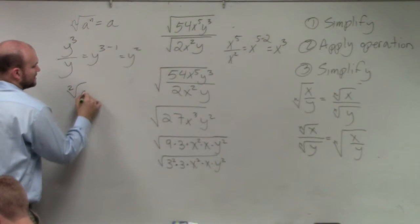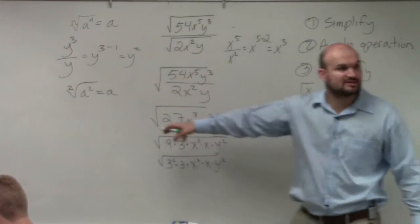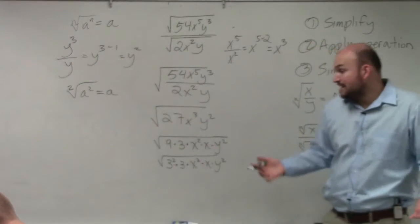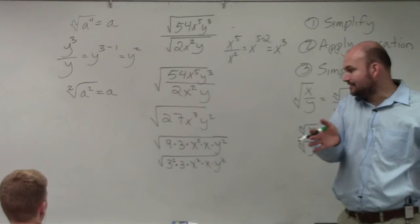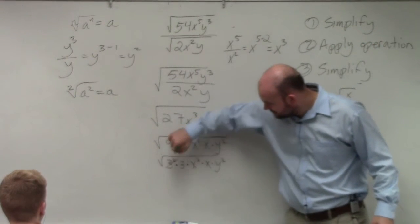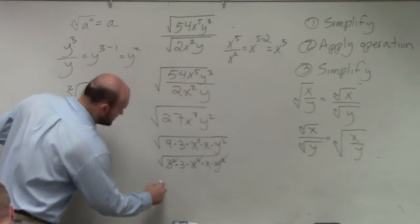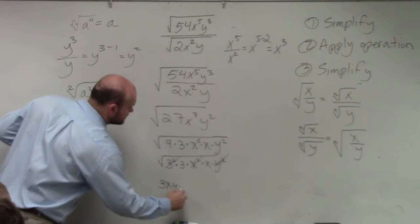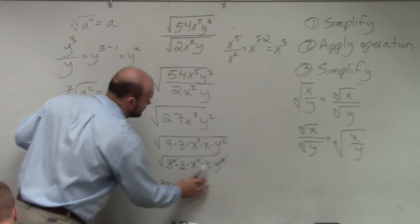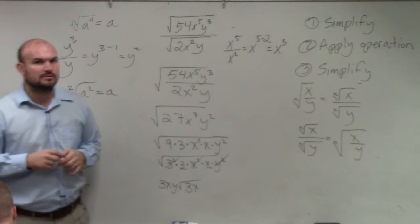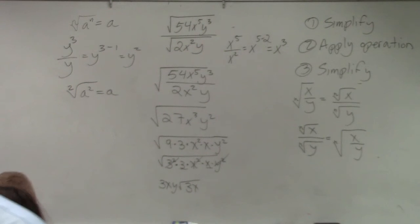So I have the square root. Any element that I have. Since we're talking about the square root, right? Because this is a 2, because nothing's written there, so it's a 2, so now I'm basically looking at every element that's to the second power I can pull out of the radical. So I have 3 to the second power, x squared to the second power, and y to the second power. So it's 3xy times the square root of what's left over, which is 3x. Yes? No?